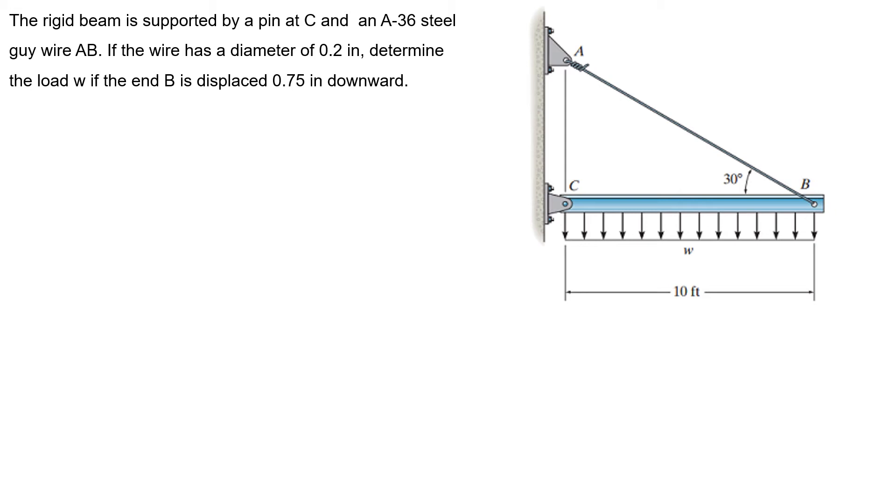Hello guys, this is the second problem of homework 5. The rigid beam is supported by a pin at C and an A36 steel guide wire AB. If the wire has a diameter of 0.2 inches, determine the load W if the end B is displaced 0.75 inches downward.